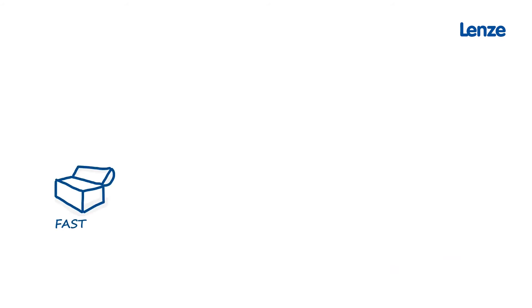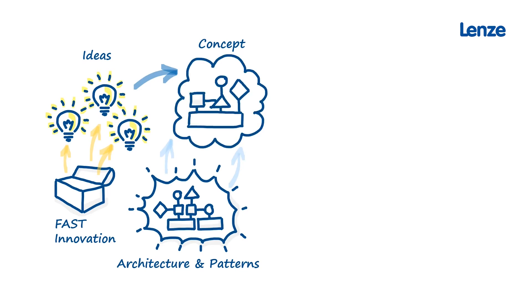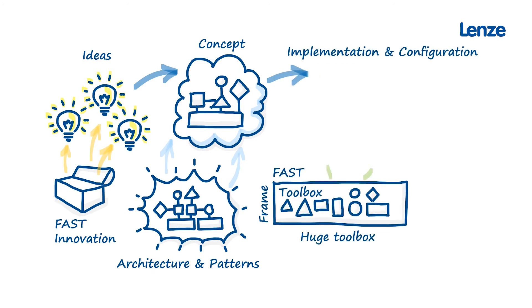In the concept phase, the guide rails in the Fast architecture help you to quickly come up with your own robust, expandable solutions. Thanks to the huge toolbox and extensive Fast services for such things as visualization, user guidance, or recipe management, there's an enormous reduction in the amount of code that you have to generate yourself.